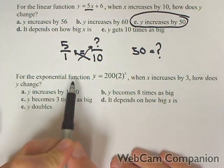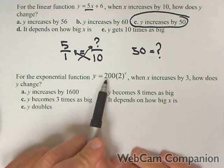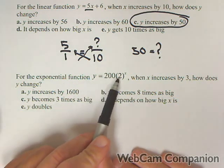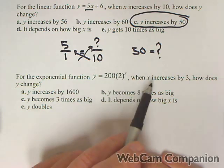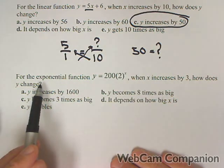Now, let's talk about doing this for an exponential function. Here's where things change. We have the function 200 times two to the x. So when x increases by three, how does y change?